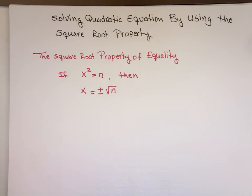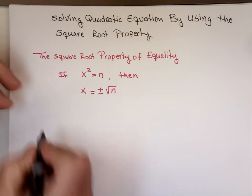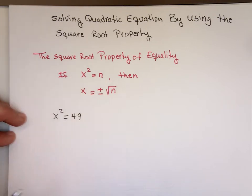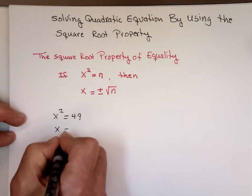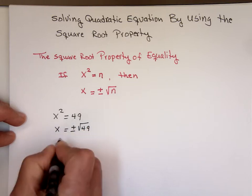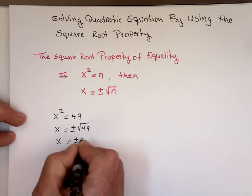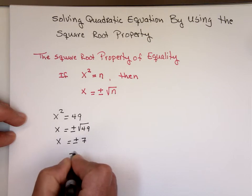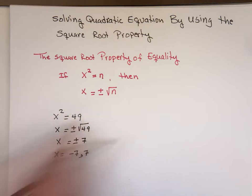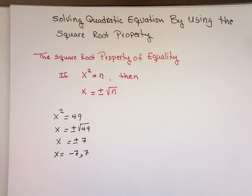If I have x squared equals 49, that fits this method. Then x will be plus or minus the square root of 49, and the square root of 49 is 7. So you have two answers: x equals negative 7 comma 7. Negative 7 squared is 49, and 7 squared is also 49.